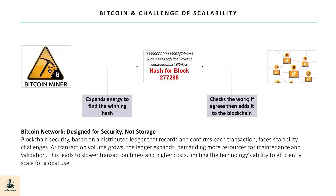As we delve into the intricacies of blockchain technology, we must address one of its most significant challenges: scalability. The blockchain is a growing list of records — blocks — linked using cryptography. Each block contains a number of transactions that are verified and added to the blockchain by miners. However, as the blockchain expands with every added block, the demands on storage and processing power escalate. More transactions lead to a larger ledger, and as this ledger grows, the resources needed to maintain and validate it increase, resulting in slower transaction times and higher costs that can hinder the technology's ability to scale.